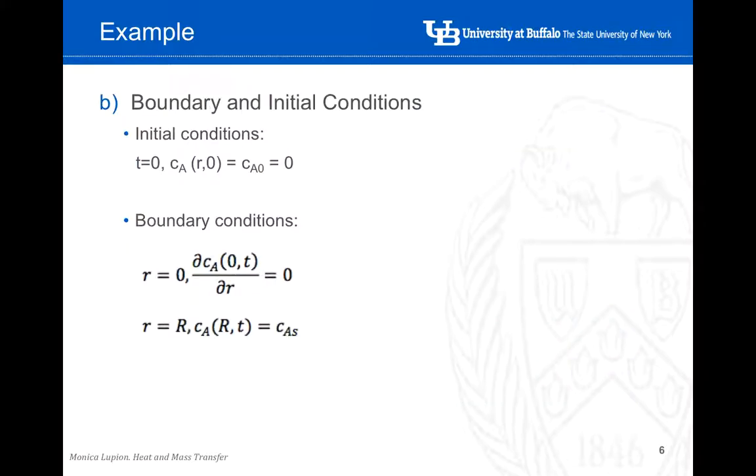The next step will be to specify the initial conditions and the boundary conditions, and this can be tricky sometimes. Initial conditions are normally easier than the boundary conditions. In this case, when the time is zero at the beginning of the process, the concentration of benzene in the water is zero. So there is no mass transfer happening yet, so the benzene hasn't gone through the water yet.